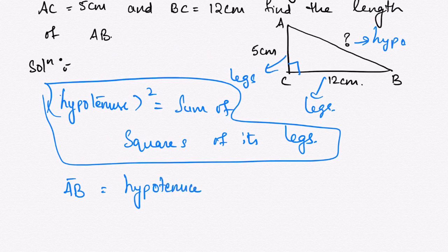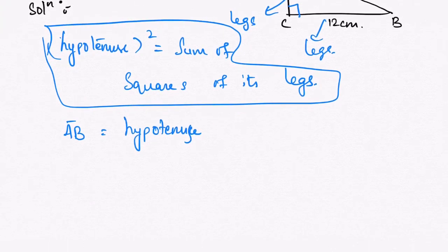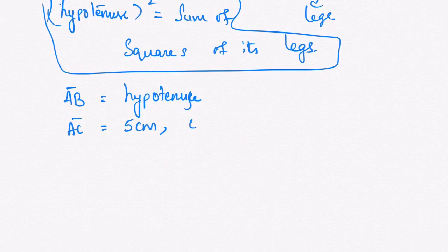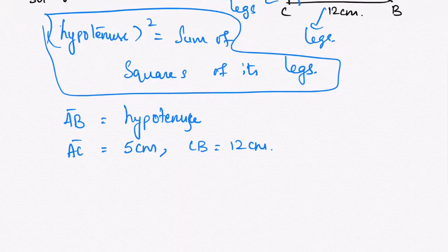The side AC, that is leg AC, is given as 5 centimeters, and BC is given as 12 centimeters. Now let us apply this in the above formula.